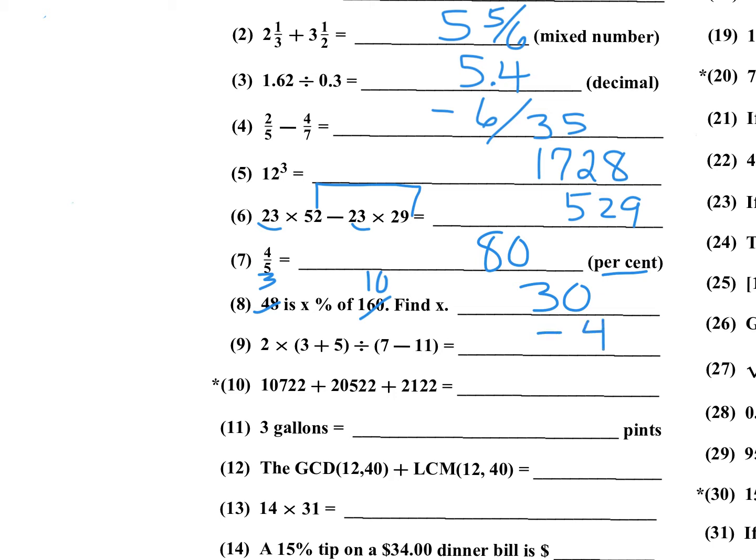Number 10 is an approximation. I add 22 plus 22 plus 22 to get 66. Then adding 100, 700, 500 gives 1300; carry a 1 — 10 plus 20 is 30 plus the carry is 31, plus 2 more is 33. So the approximation is 33,366.